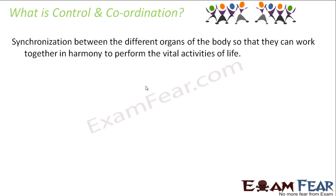So what is control and coordination? It is the synchronization between the different organs of the body so that they can work together in harmony to perform the vital activities of life. Synchronization is the key term here. When we talk about control and coordination, we are talking about the synchronization between different organs so that they not only perform their own function but also synchronize their timing with respect to other organs, making the overall output beneficial for the entire organism.